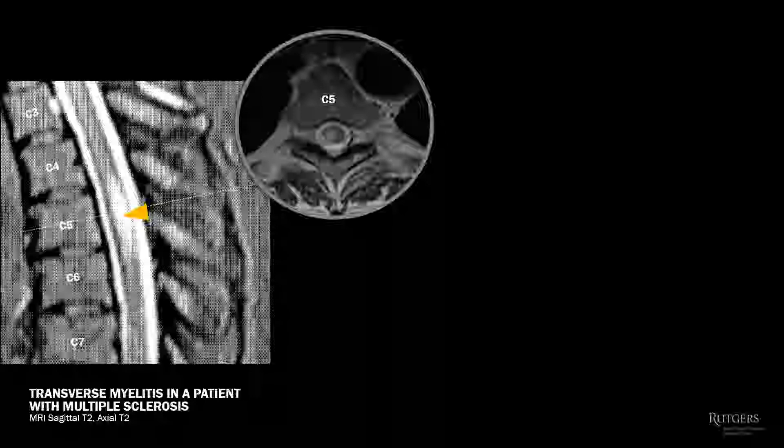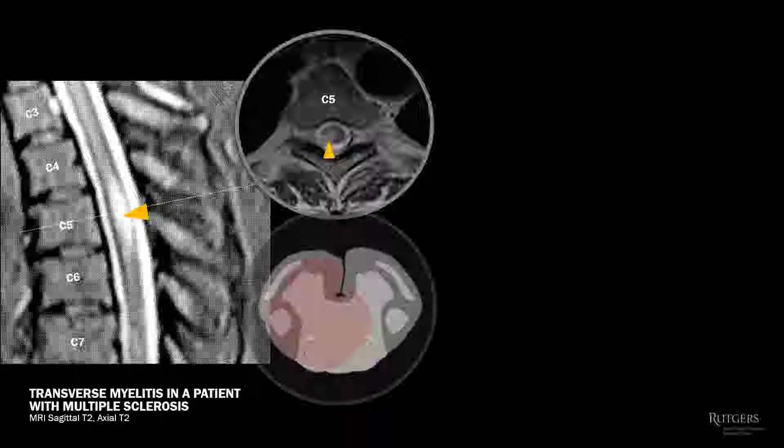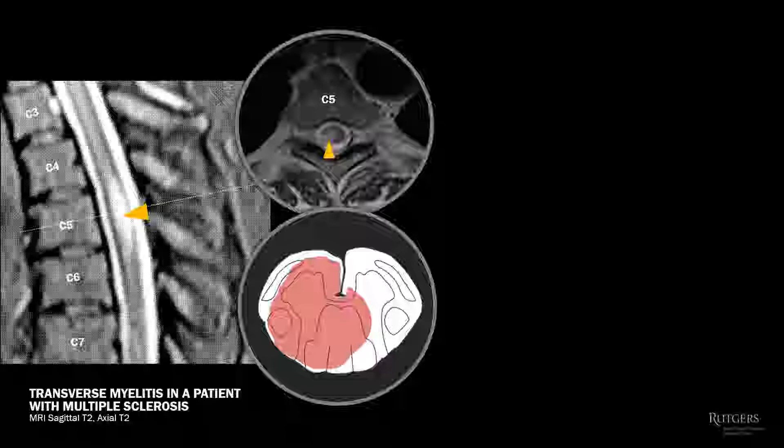In this case, we suspect myelitis — focal inflammation in the spinal cord. When the axial cut is done, you can see that the lesion is mostly on the right side, the same side where the patient has more symptoms. We often call it transverse myelitis. By definition, 'transverse' refers to midline crossing of the lesion.